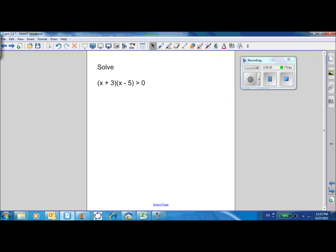Now let's try it on an inequality. X plus 3 times X minus 5 is greater than zero. What we often see students do is take X plus 3 greater than zero or X minus 5 is greater than zero, and they apply the zero product property to this.